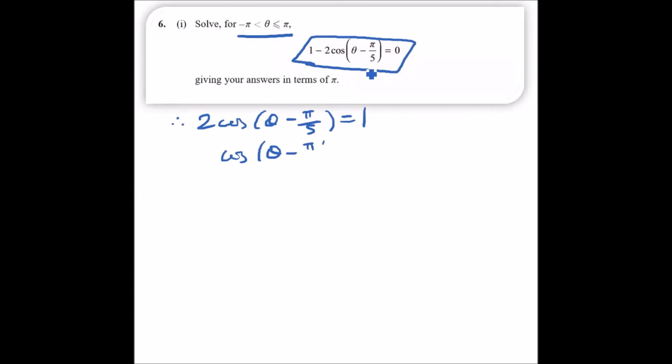Now cos inverse on this should give us cos inverse of 1/2, which will give us π/3 in the calculator. Remember, this is the cos inverse.